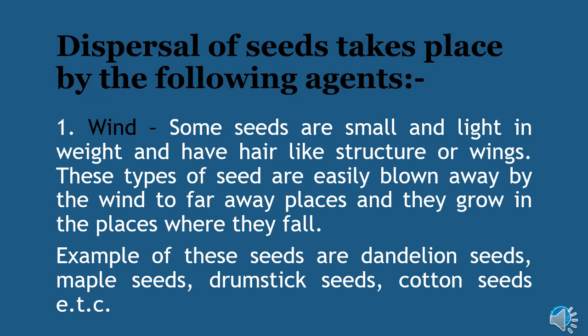Number one: dispersal by wind. Some seeds are small and light in weight and have hair-like structures or wings. These types of seeds are easily blown away by the wind to far away places and they grow in the places where they fall. Examples of these seeds are dandelion seeds, maple seeds, drumstick seeds, cotton seeds, etc. Students, please turn to your book page number 55 to see the picture of dispersal by wind.